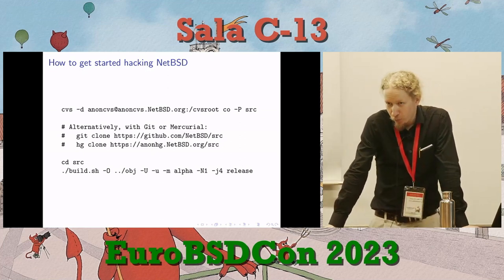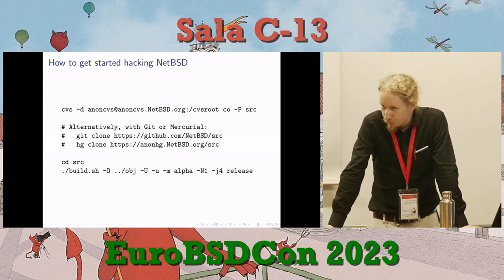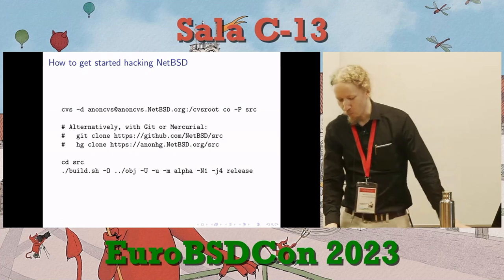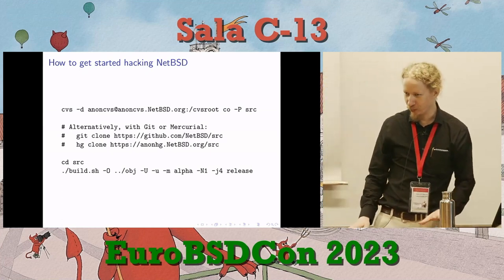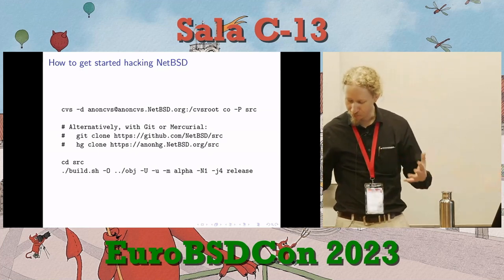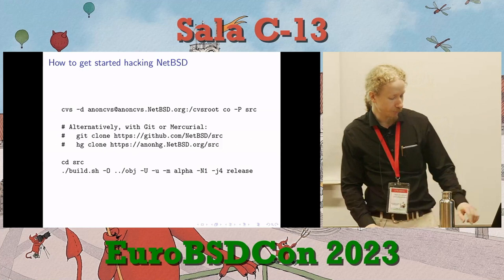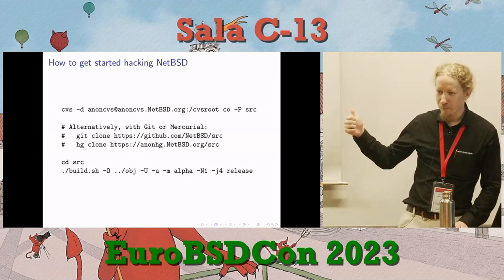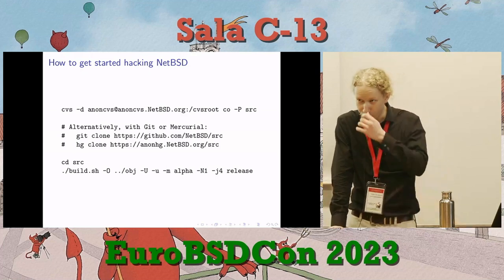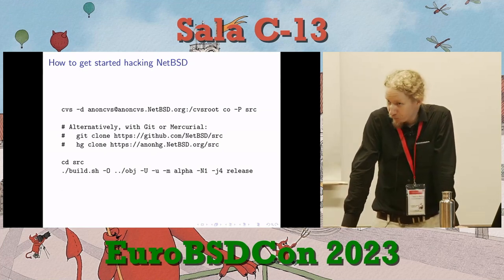In NetBSD, unless you go out of your way to do it differently, every build is a cross-build. This is very nice for keeping the build isolated from the host environment, so you don't have to worry about structure definitions being mismatched between the host and the resulting NetBSD. Everything starts with a cross-compiler and a clean environment — a very well-controlled build system. It's been like this for about 20 years, and that's a good part of what attracted me to using NetBSD in the first place.